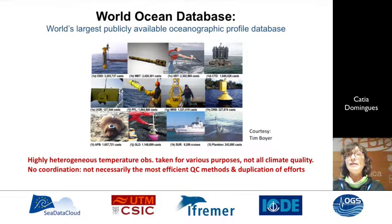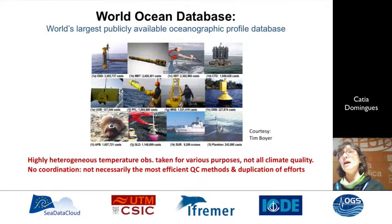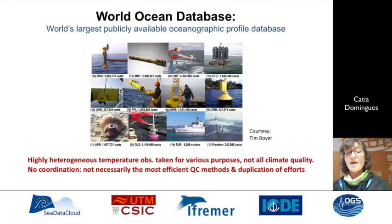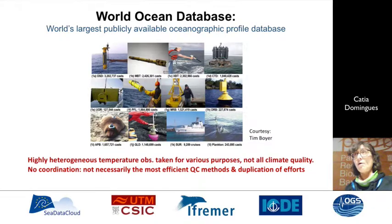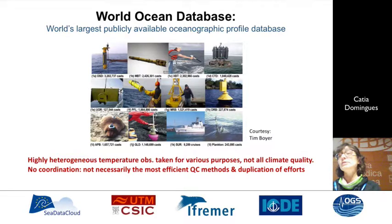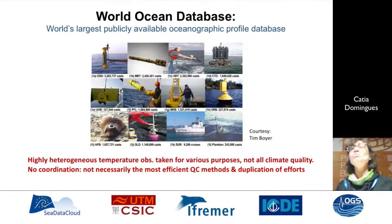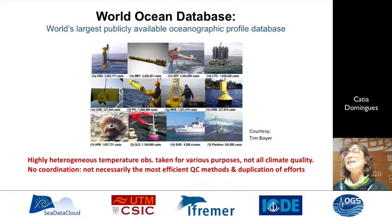The problem is that we have this big world ocean database with a variety of instruments, and not all of them have the same quality — particularly climate quality. These measurements were largely undertaken for various purposes. Without coordination, it's really hard to know whether you are applying the most efficient quality control methods, and a lot of duplication of effort happens. People gather data from the world ocean database, move it to their country, apply their own quality control, and release the data with different branding. This happens everywhere.